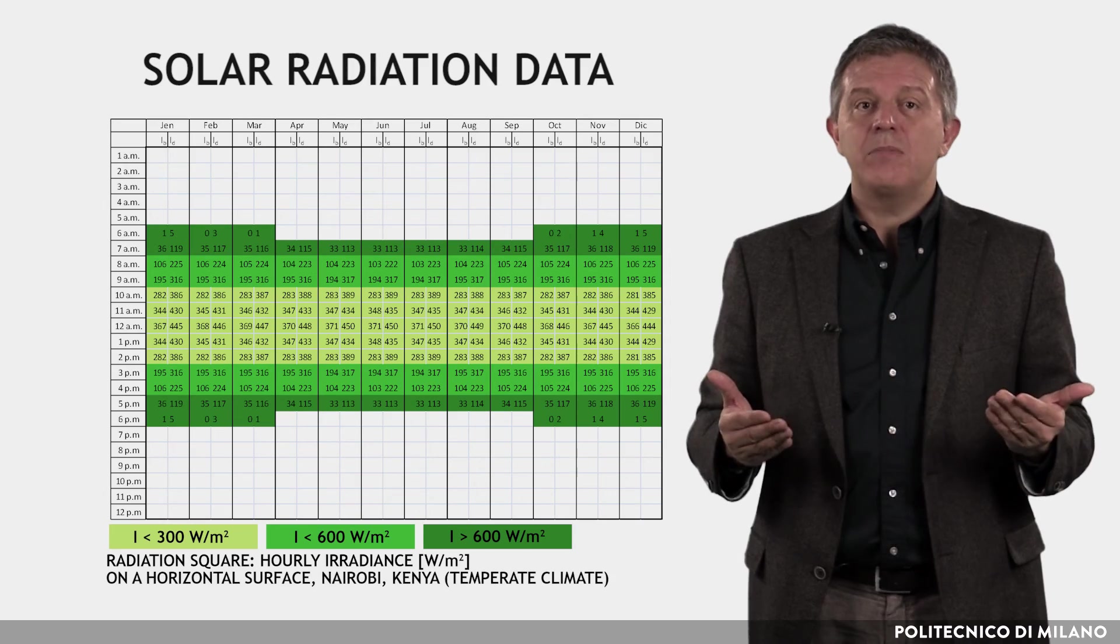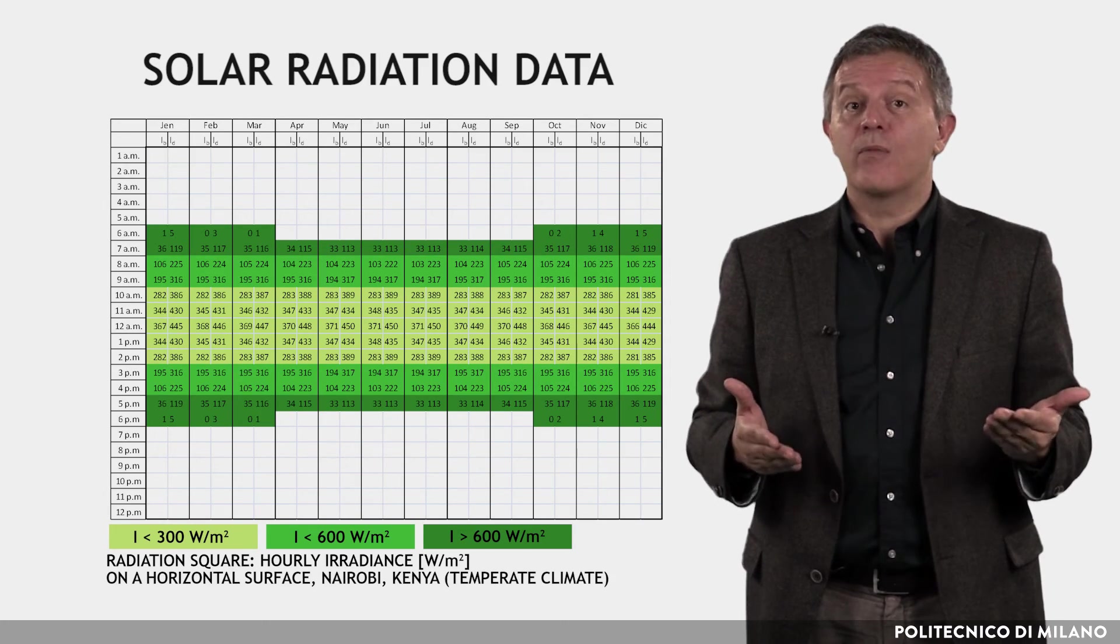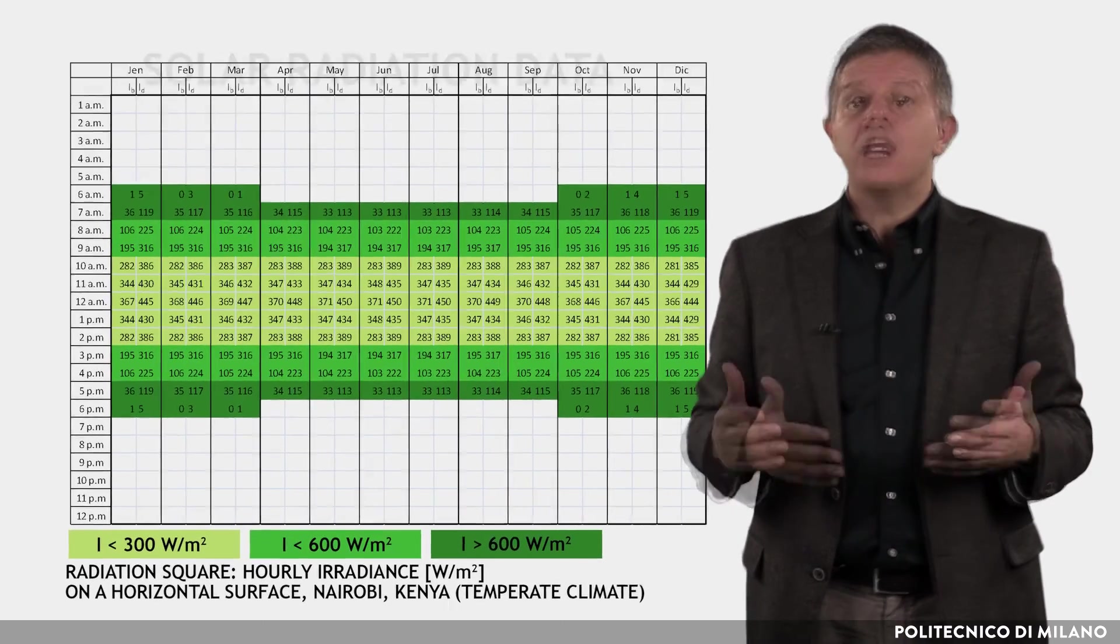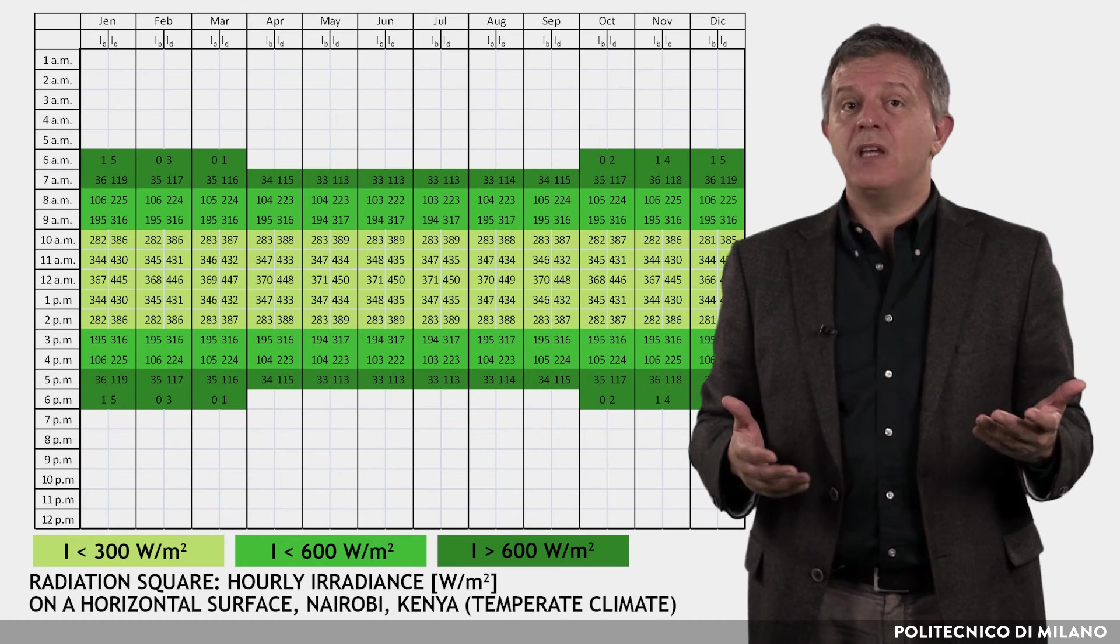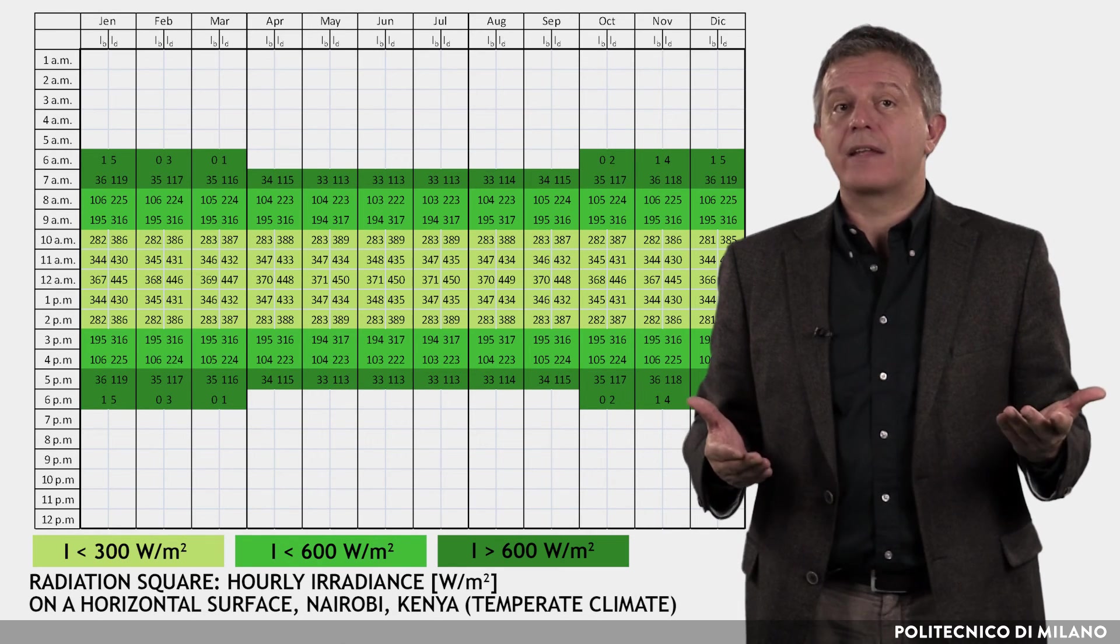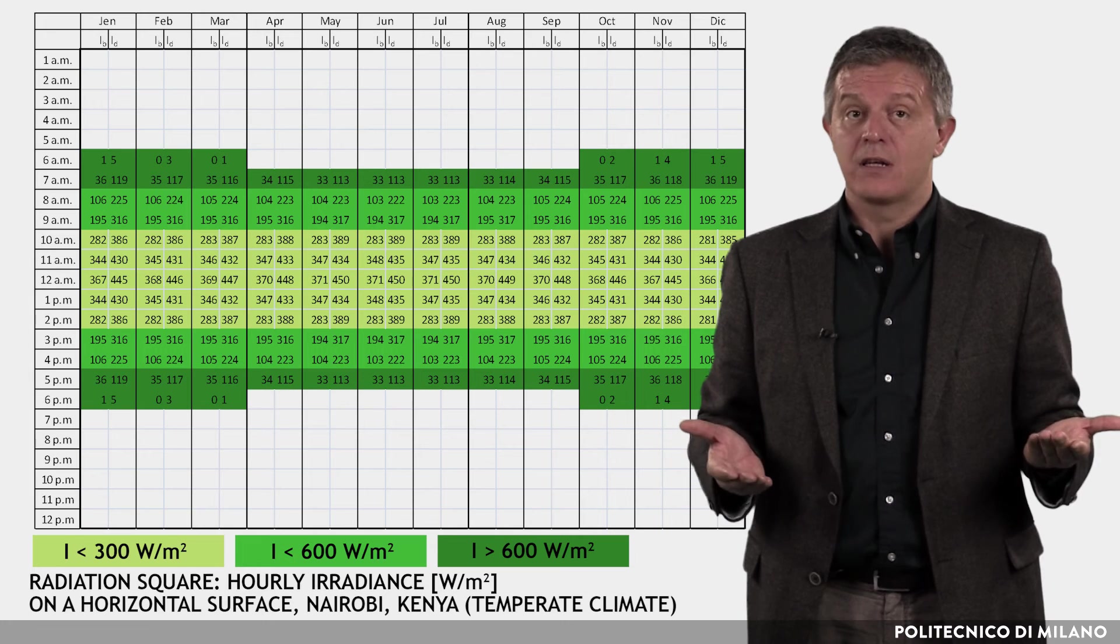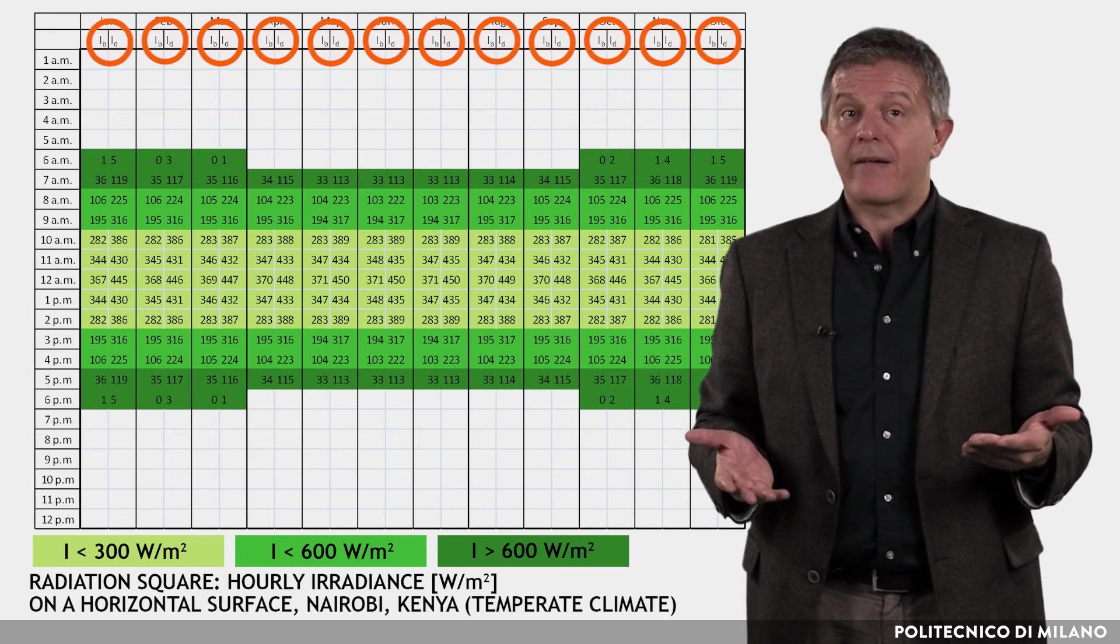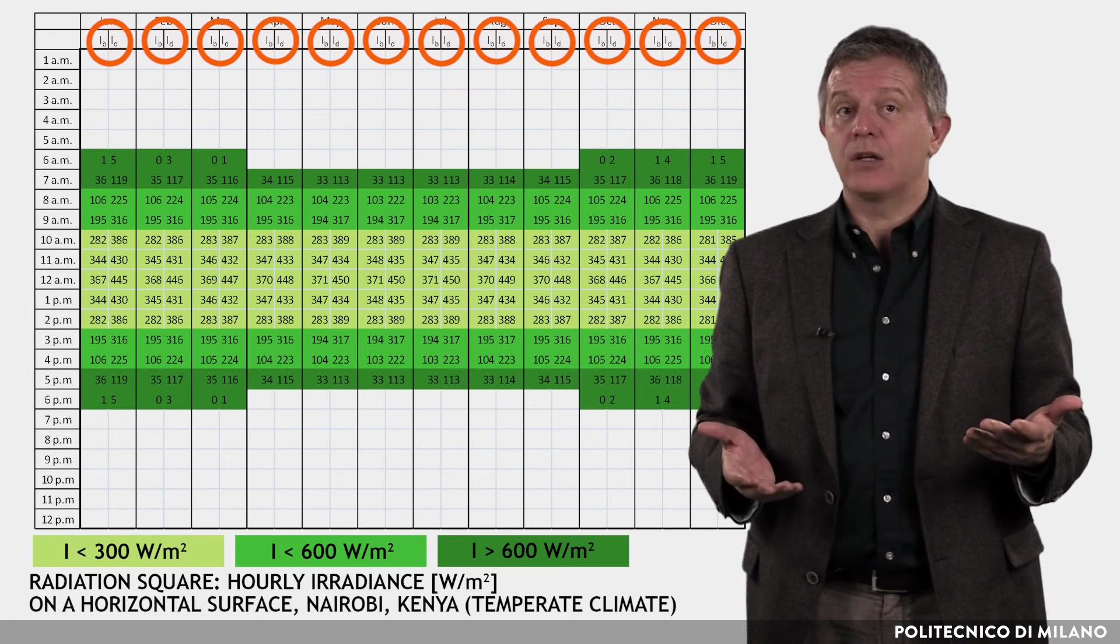Solar radiation data can be taken from databases or from radiation squares. Each radiation square shows the mean monthly hourly solar irradiance on a horizontal surface, subdivided into its direct components.